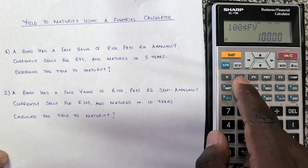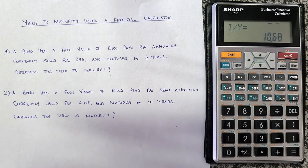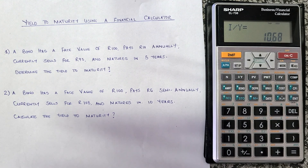Press COMP and then I/Y, and there we have it — the yield to maturity is 10.68%. I hope this has made sense and you've gained value from this lesson. If you have, consider subscribing to our channel, liking this video, and sharing it with those you think it might help. Till next time, cheers!